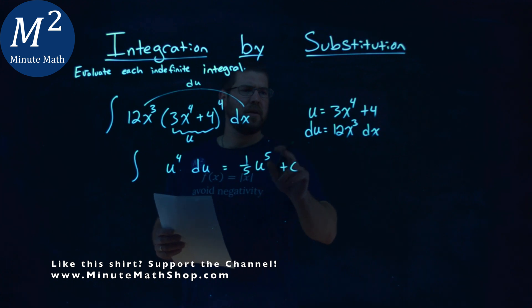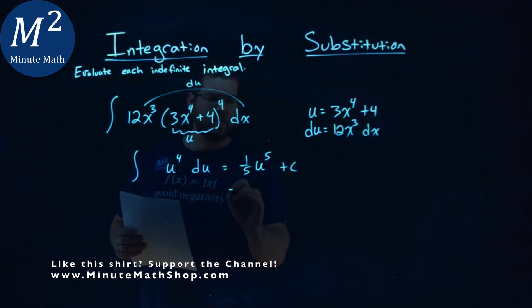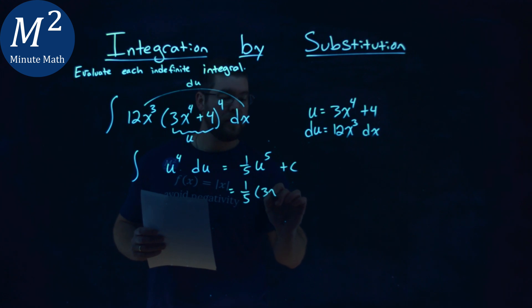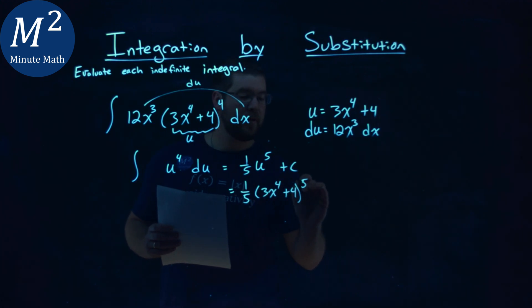At this point, we plug u back in. So we do that. We have 1/5 out front. Our u value is (3x⁴ + 4) to the fifth power. If I can write a 5 here... fifth power plus c.